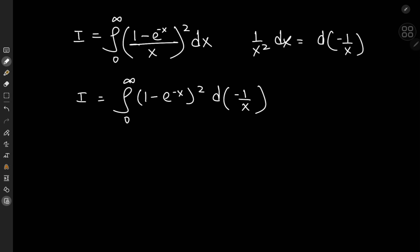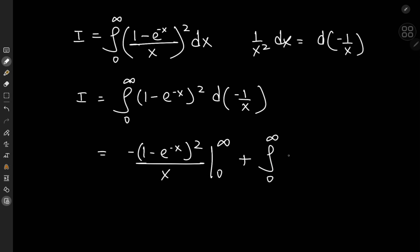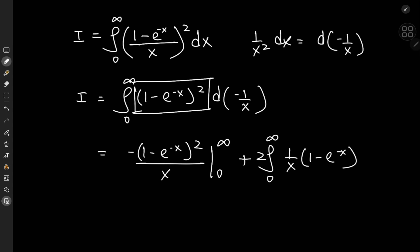On integration by parts, we have negative (1 minus e to the negative x squared) divided by x with limits 0 and infinity, minus — with this extra negative sign cancelling out — plus the integral from 0 to infinity of (1 over x) times the derivative of this function, which is 2 times (1 minus e to the negative x).